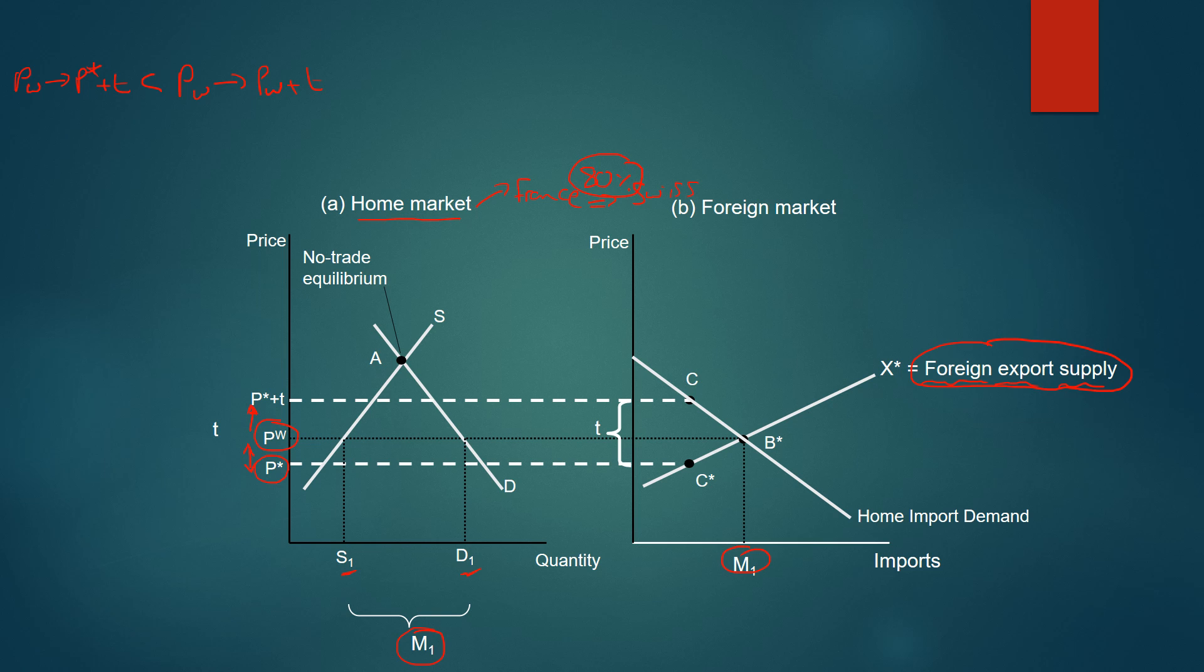Well, it all links back to the idea of this upward sloping foreign export supply curve. Like I said, the foreign export supply curve shows that the price of exports from the foreign market will respond when the large country changes its import demand. And as we can see, the tariff has changed the import demand to a lower level M2.